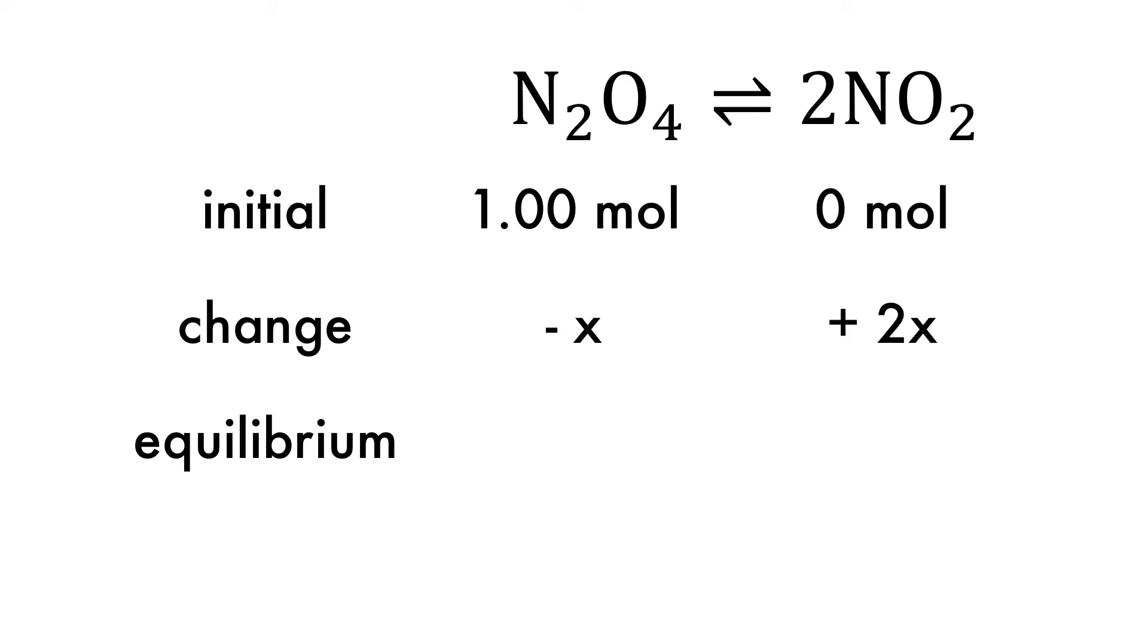The total change in concentration is unknown at this point and so it is represented as x, negative x for the reactant because it is being used up to reach equilibrium. Because the stoichiometric coefficient of the product is 2, plus 2x is written. Had the coefficient been 1, then only 1x would have been written. The reaction stoichiometry is always followed. Finally, the sum of the initial and the change is calculated to give the equilibrium amounts.